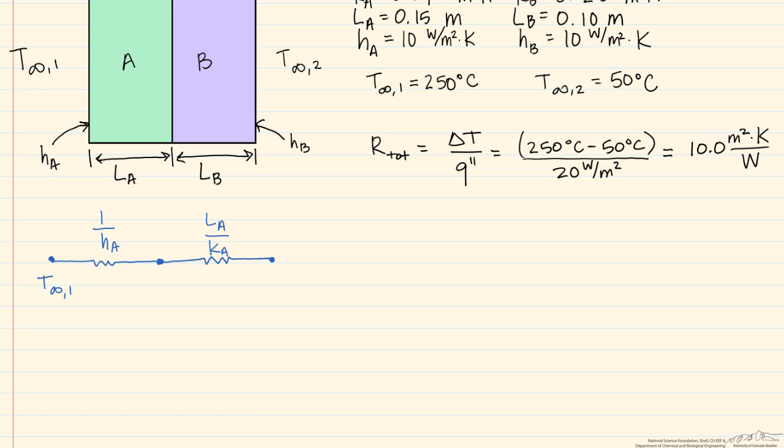Then we have another resistance between the two materials, which is this contact resistance that we're looking for. Our next resistance is our second conductive resistance. Then we have our final convective resistance, and our T infinity two.